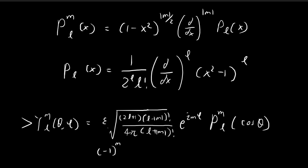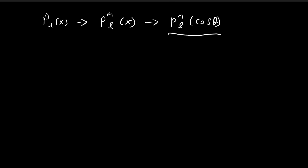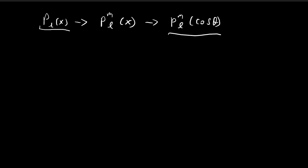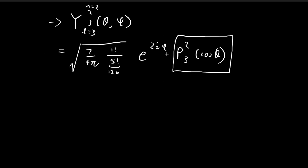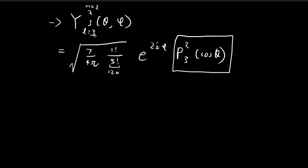Let's open a new page. We're going to find first the Legendre polynomial, which will allow us to find the associated Legendre polynomial. Afterwards we substitute cosθ in place of x, and then substitute that term back into the expression. We want to find P₃(x) because l is equal to 3.